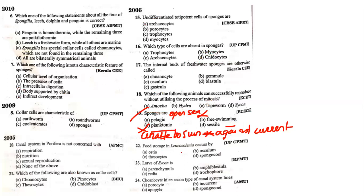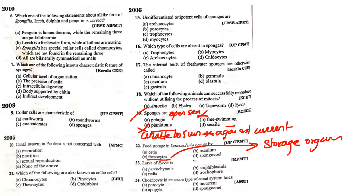Food storage in Leucosolenia is done by which cell? Thesocytes — thesocytes are storage organs. Leucosolenia stores food in thesocytes. Ostia and osculum help for water intake and releasing. Spongocoel is the body cavity. So the answer is thesocytes.